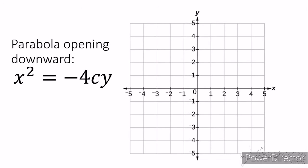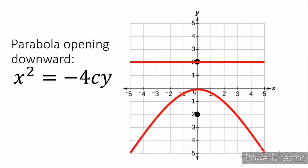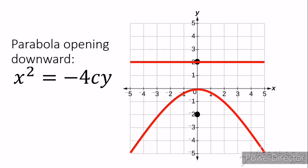Now, how about if our parabola opens downward? The equation is x squared is equal to negative 4cy. Notice the difference: when opening upward, the equation has positive 4cy; when opening downward, you can clearly see negative 4cy. When graphed, our directrix is located above our vertex and our focus is located below our vertex, because the parabola opens downward.